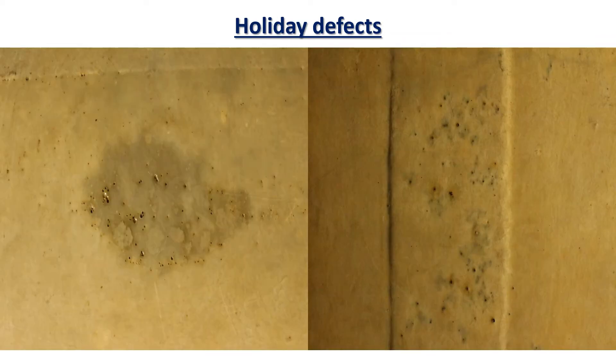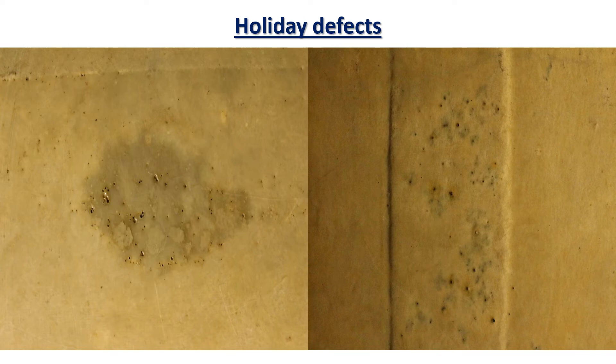A holiday can be defined as a discontinuity in coating when a part of the surface remains uncoated, a defect such as an area of insufficient coating film thickness, a pinhole within the coating, a crack within the coating, or an improper adhesion or bonding of the coating. A paint, coating, or lining must be applied as a continuous film to perform its intended function. Early failure will occur if there is a discontinuity — a holiday — such as a pinhole, void, crack, area of low dry film thickness, or inclusion and contaminant in the coating film.